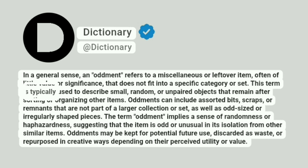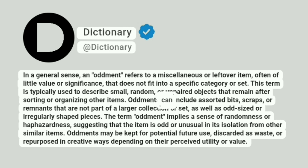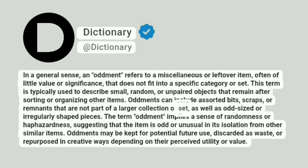This term is typically used to describe small, random, or unpaired objects that remain after sorting or organizing other items. Oddments can include assorted bits, scraps, or remnants that are not part of a larger collection or set, as well as odd-sized or irregularly shaped pieces.